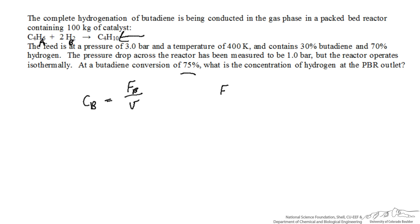The molar flow rate of B exiting the reactor in terms of conversion is just equal to the flow rate of B into the reactor, so what we start with, minus that which is consumed by reaction. We're keeping track in this case of the conversion of butadiene.